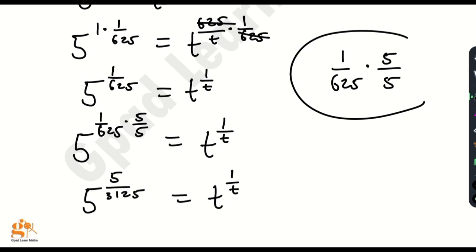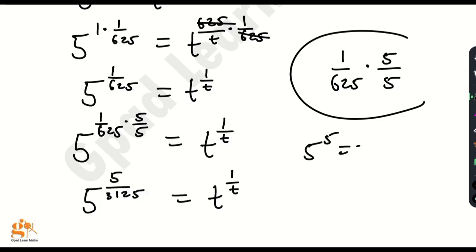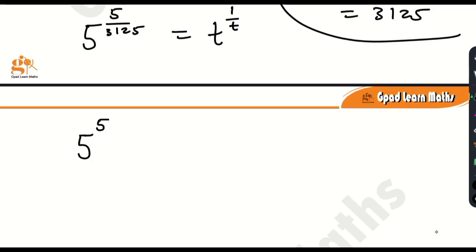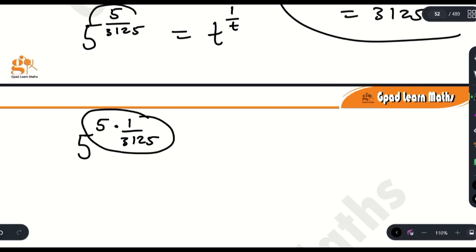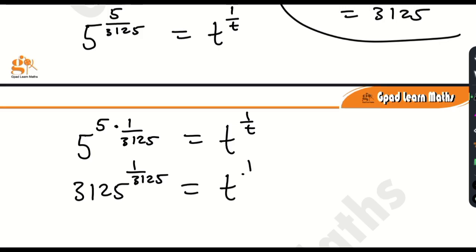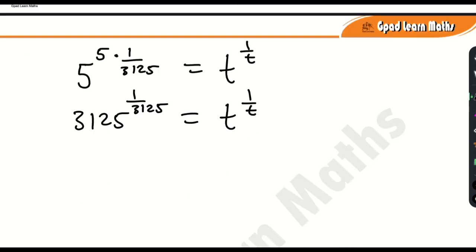Now, 5 raised to the power 5 equals 5×5×5×5×5, which is 3125. So I can rewrite the left side as 5^5 times 1/3125, and since 5^5 = 3125, this becomes 3125^(1/3125). Therefore: 3125^(1/3125) = t^(1/t). Because the base and the exponent denominator match on both sides, we can directly compare.